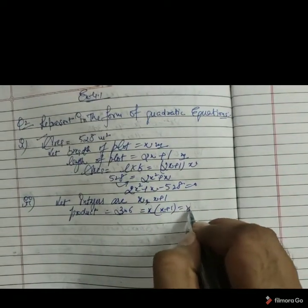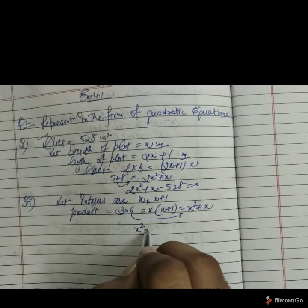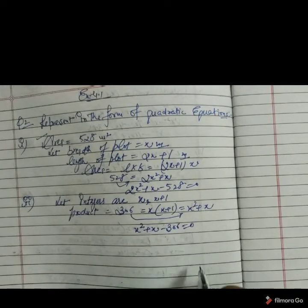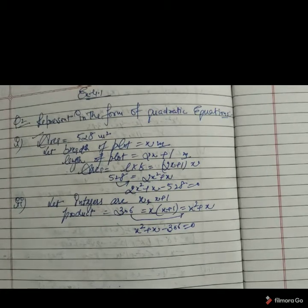If you open the bracket we get on the right hand side x square plus x. Shifting on the other side we get final answer x square plus x minus 306 is equal to 0. This is the required information converted in the form of quadratic equation.